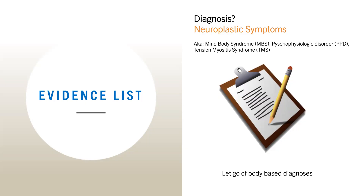Once you're assured the symptoms are neuroplastic, you can start the neural reprocessing therapy. Your body is not broken — your unconscious brain just believes that it is. Your unconscious brain is also not broken. This is actually the normal response from the protective nervous system because of the stressors, hurts, and harms we've been through in our lives.